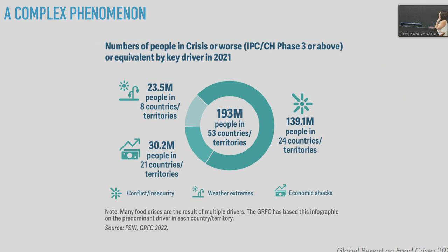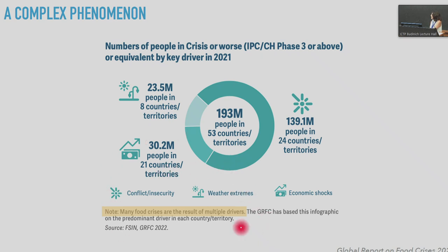This is not only a big problem but also a complex one. Food security experts characterize food insecurity by three main drivers: conflict and physical insecurity, weather extremes, and economic shocks. Although in every region one main driver is typically identified, most food crises are the result of multiple drivers and the interactions between weather, economic shocks, and conflict.